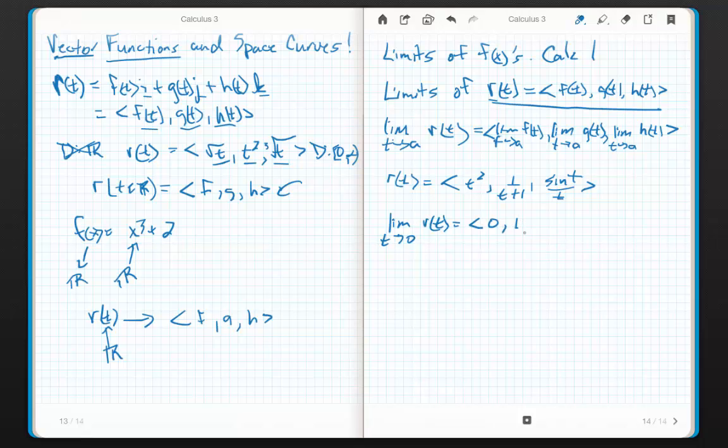Then the limit as t goes to zero of r of t is, well, what's the first rule of limits, right? Plug it in. If all hell breaks loose, do some algebra. Look at a trick or remember stuff, right? So, this value is going to be zero, comma, one, comma, one. Remember, I can always write these in the i, j, k in the component notation. So, this would be zero i, or just zero, plus j plus. That is the limit of that vector.